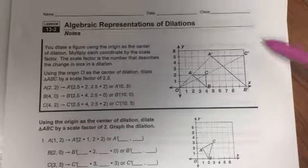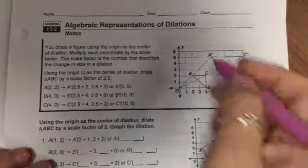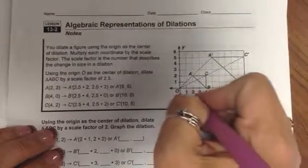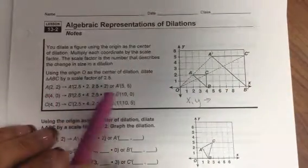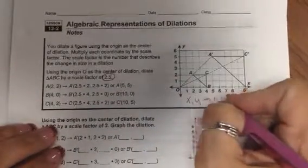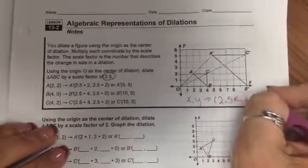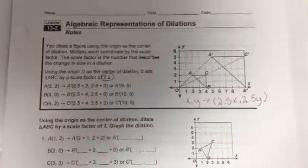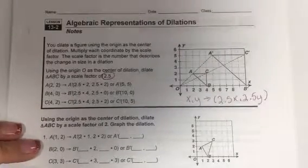This first one has given you a breakdown of exactly how they do that. I'm going to tell you that the algebraic representation for a dilation looks like this: x, y, and we are going to change that to, for this particular figure, they give us a scale factor of 2.5. So that would look like (2.5x, 2.5y). All that's really telling us is that we're going to take our x and our y, and we're going to multiply them times 2.5 to find our new or our prime.